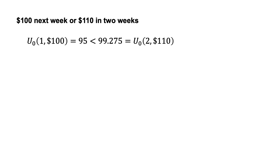The set of decisions across Choice 1 and Choice 2 are time consistent. If Allison selected $110 in two weeks for Choice 2 and was given a chance to change her choice after one week — which is effectively Choice 1 — she would not change her decision.